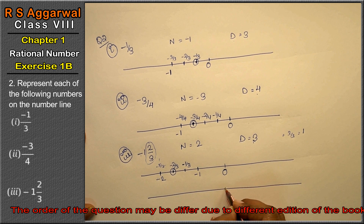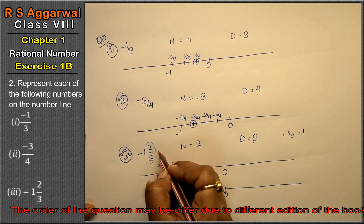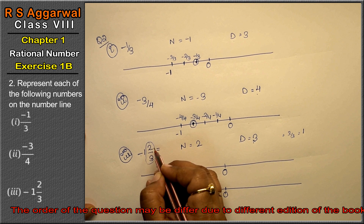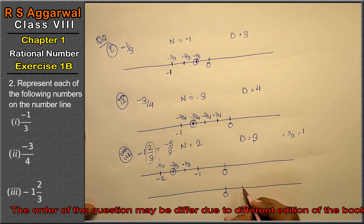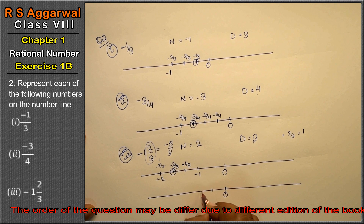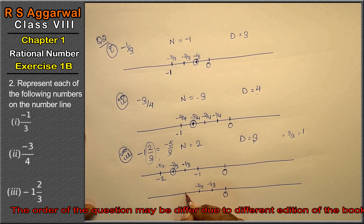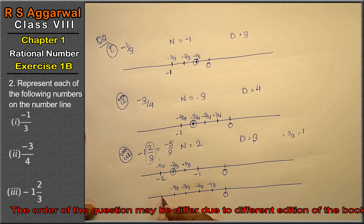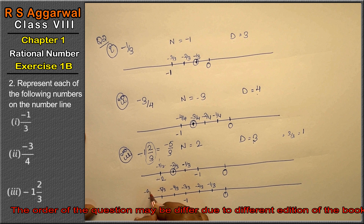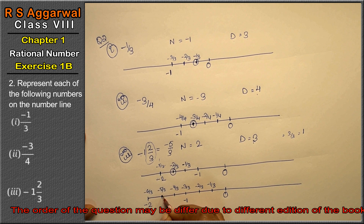Another way I had told you - simple. This is 0. We want to make it a mixed fraction, we want to make it a fraction. So: minus 1 upon 3, minus 2 upon 3, minus 3 upon 3, minus 4 upon 3, minus 5 upon 3. What is minus 3 upon 3? Minus 1. Minus 6 upon 3 - how much is it? Minus 2. So which is minus 5 upon 3? That means this is the number. This is the answer.